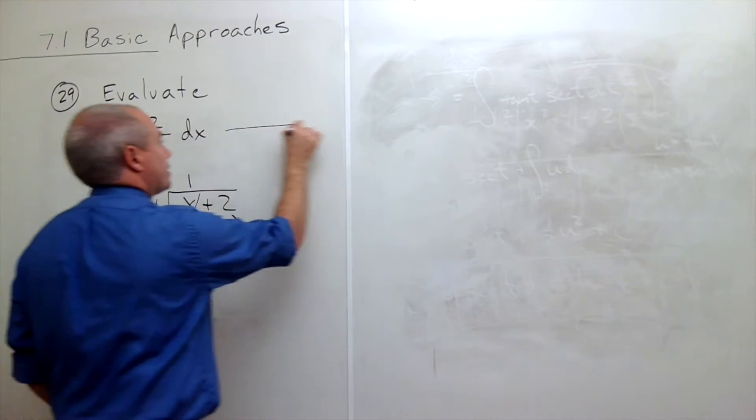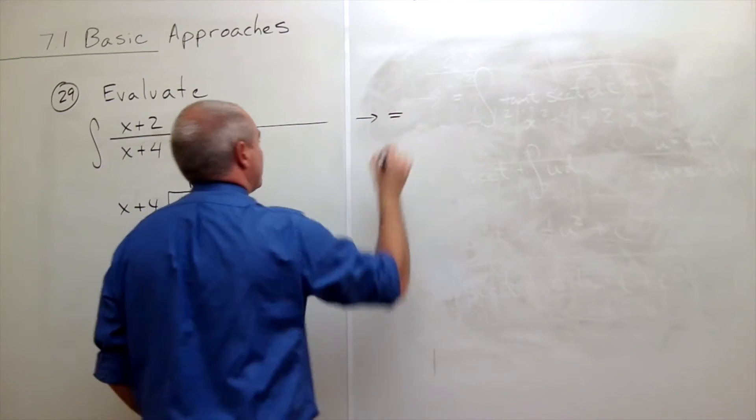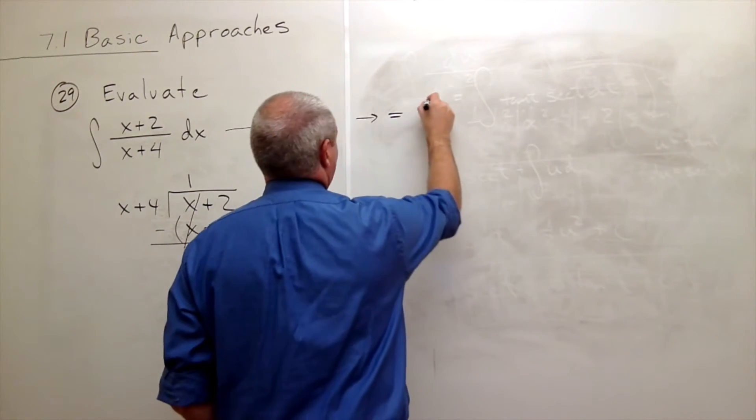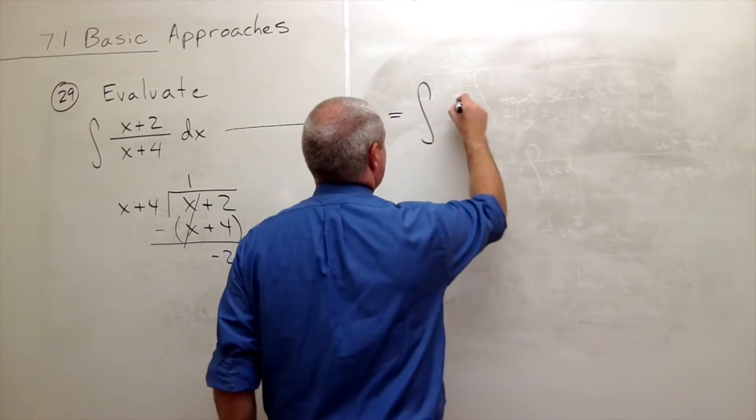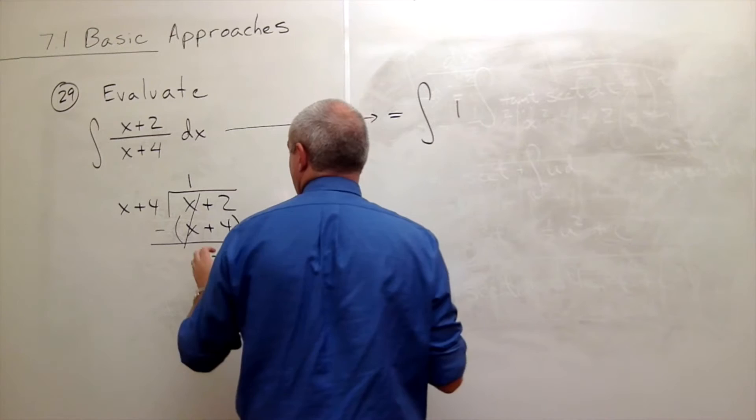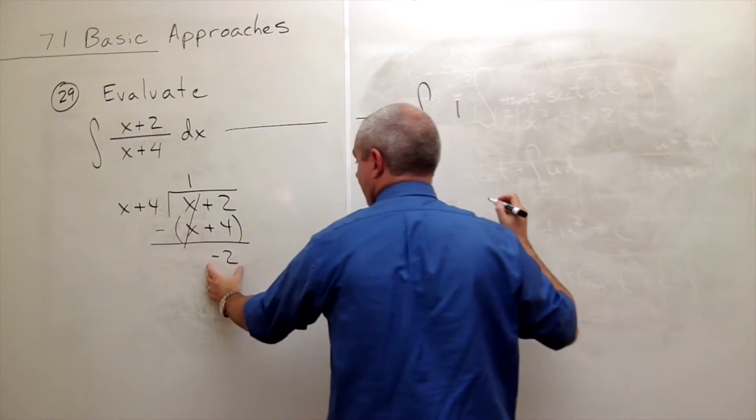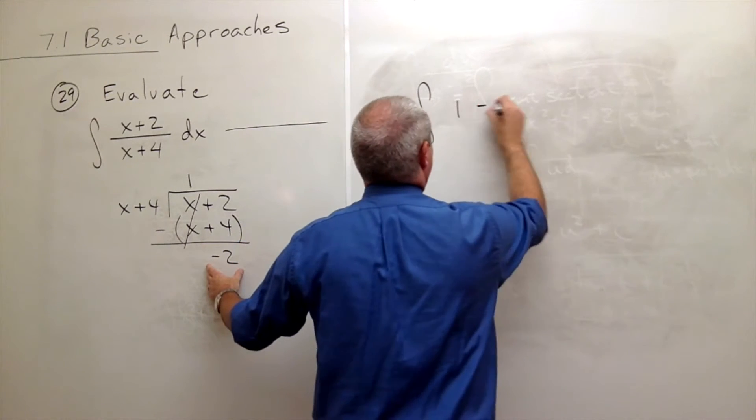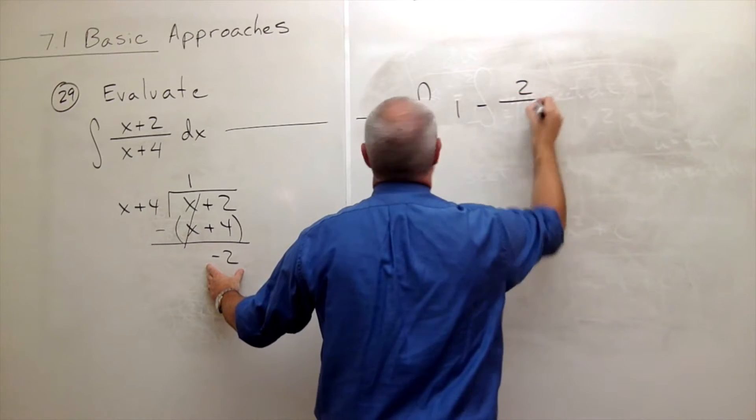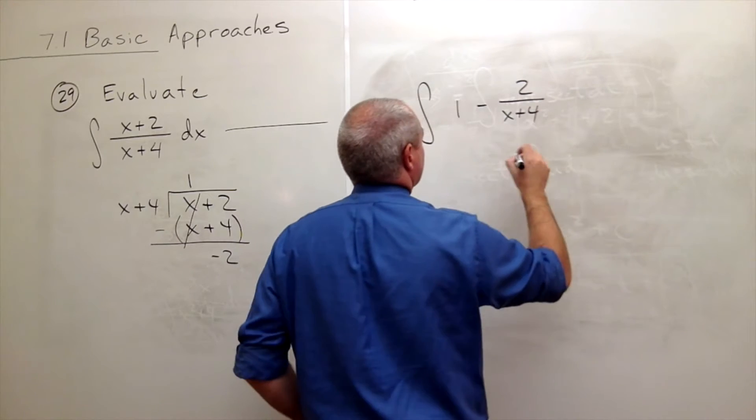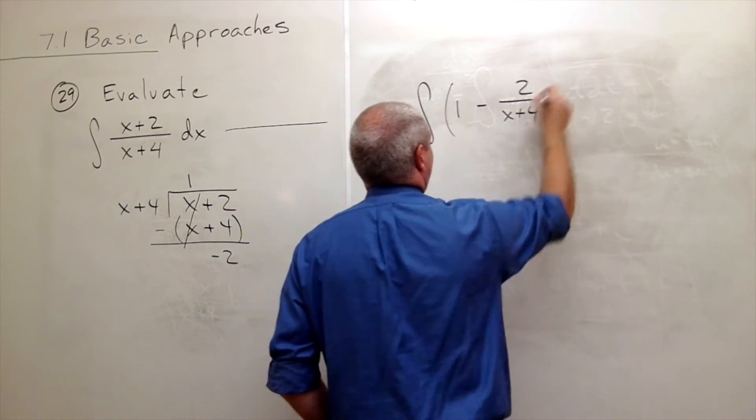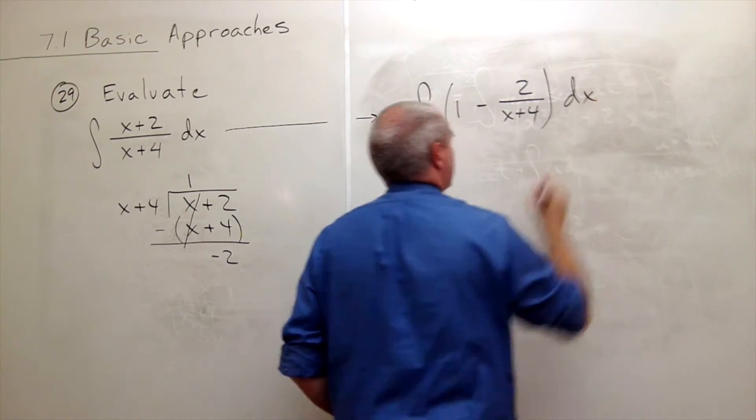And I can rewrite this integral as the integral of, well, it went in evenly one time, so 1, plus—actually maybe I should say minus—because we have minus 2 over x plus 4, all of that dx.